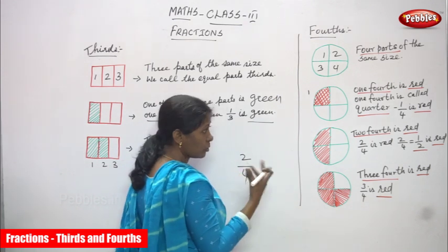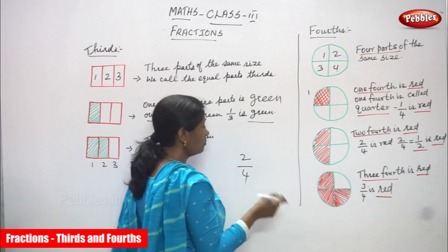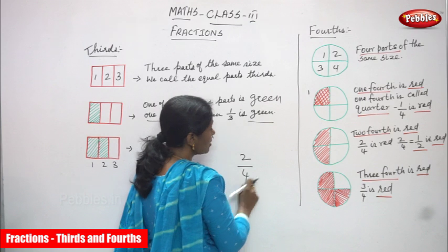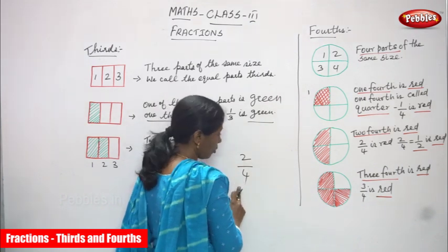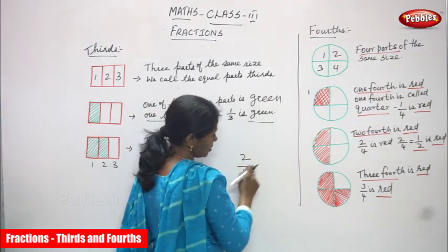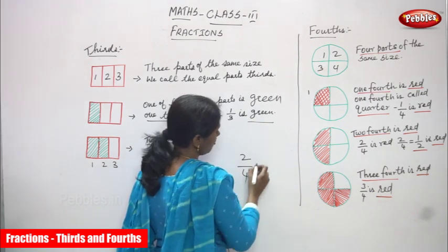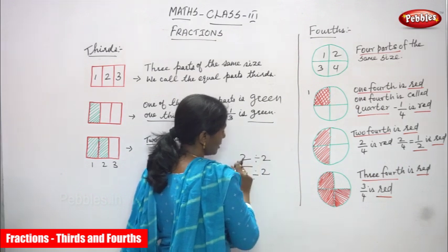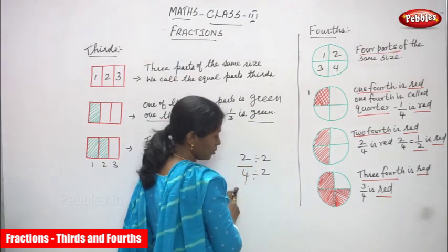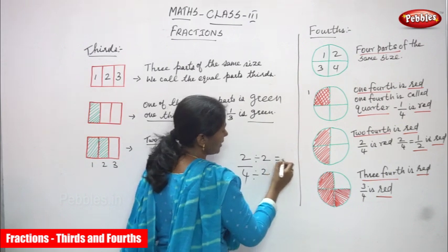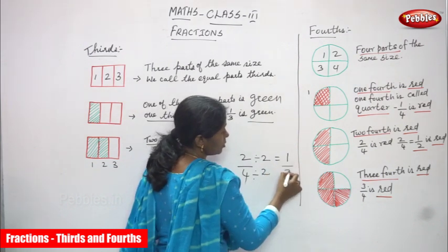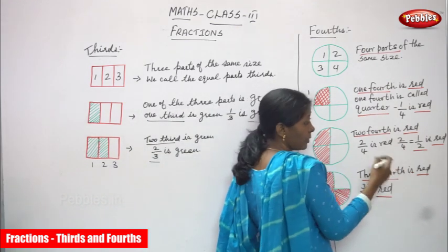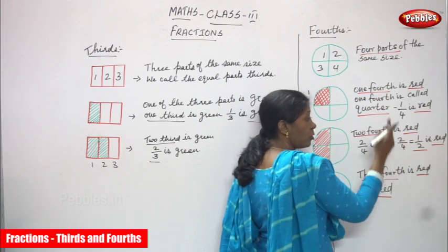Generally we call it as two fourths. In fraction we write two by four — that means four equal parts total, and I shaded only two parts. So we write two by four. To simplify: the numerator is two, the denominator is four. Two divided by two gives one; four divided by two gives two. That is one by two. So two by four is equivalent to one by two — what is the equivalent fraction of two by four? One by two.